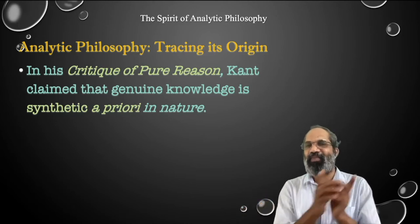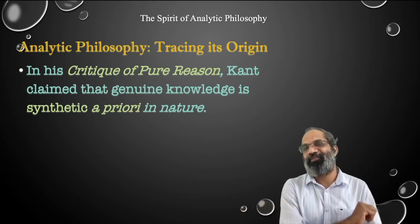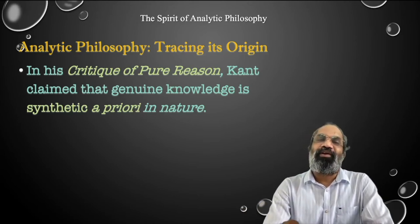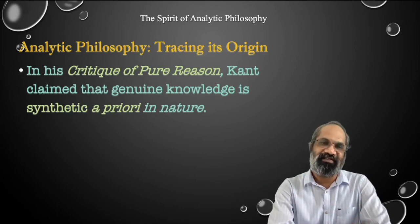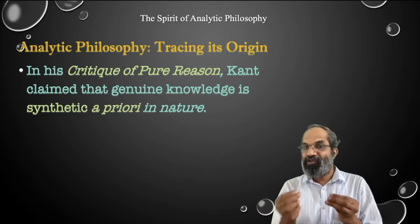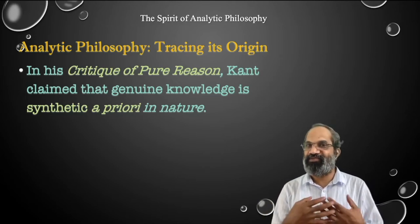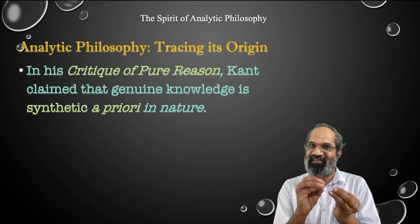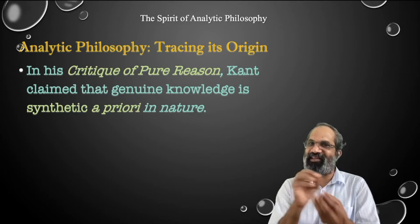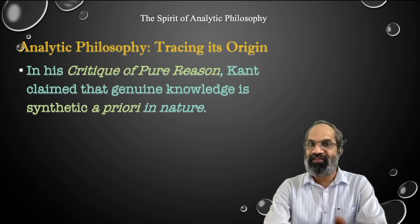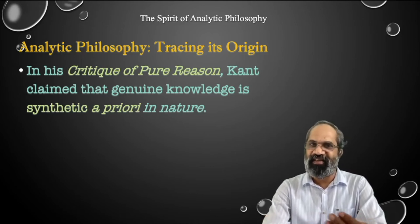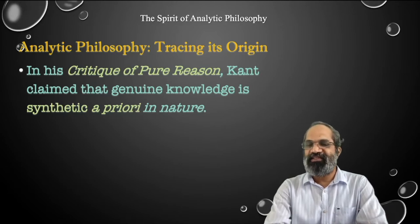For Hume, all statements of knowledge were either a priori and analytic or a posteriori and synthetic — either relations of ideas or matters of fact. Now Kant brought in a third type of knowledge: synthetic a priori, like the notion of causality — 'everything has got a cause.' We know this a priori without experience, and it is synthetic in nature. Kant proclaimed this as genuine knowledge, and further details will be discussed when we study logical positivism.